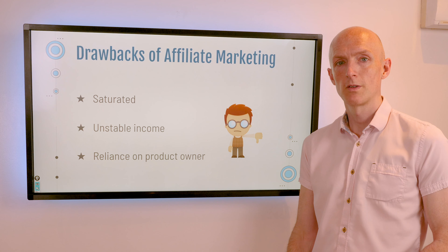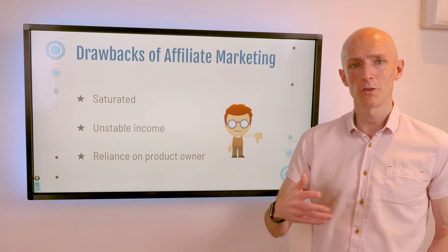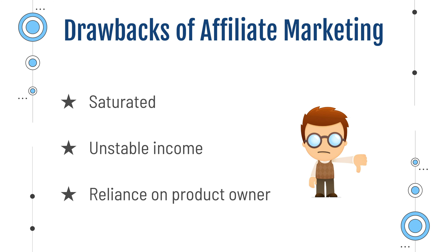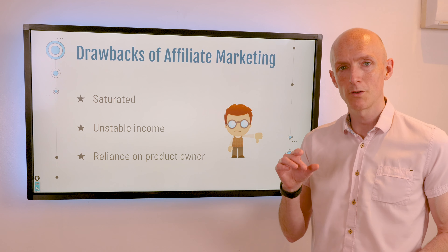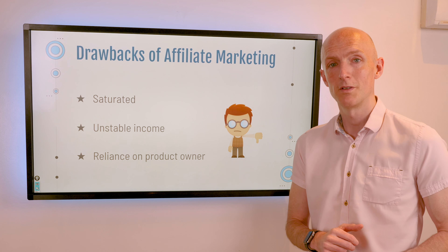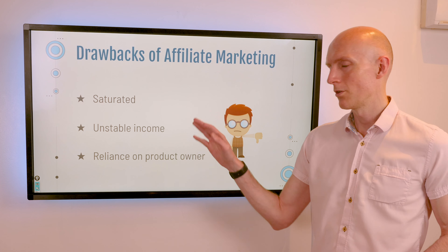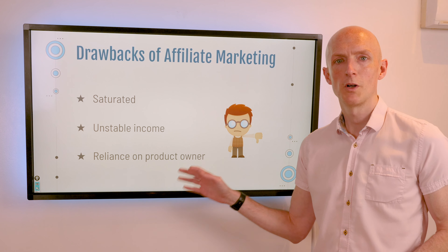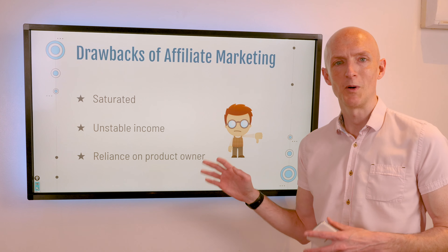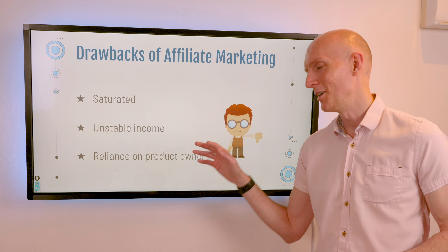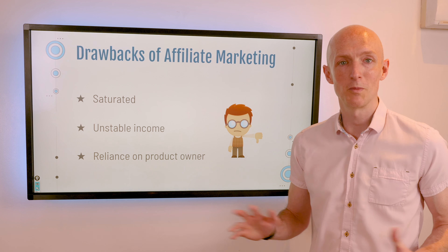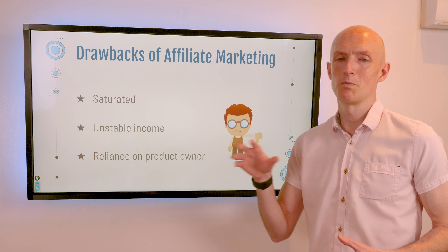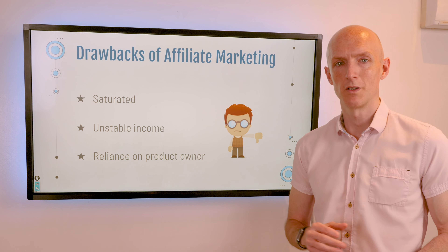The drawbacks of affiliate marketing: it's quite saturated — many people run blogs and YouTube channels, making it somewhat difficult to break into, especially in competitive niches. Your best bet is to niche right down into a micro niche and drive targeted traffic to a relevant and compelling offer for that audience. It's somewhat an unstable income — if people don't buy, you won't generate payment, and you're relying on the product owner. If the company goes bust, your traffic-building efforts could be wasted. I'd recommend promoting multiple products within one micro niche so you don't have all your eggs in one basket.